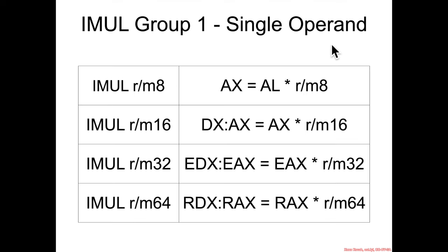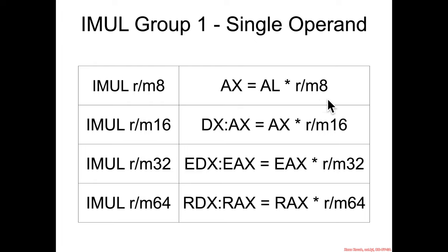The first group are versions with a single operand, which have implicit usage of EAX, AL, RAX, etc. With IMUL and an RM8, that's an 8-bit register or 8-bit memory value. Implicitly it multiplies AL — the least significant byte of RAX — by that 8-bit value and stores it into AX. So 8 times 8 goes into a 16-bit register, with no danger of truncation since you've got twice the size.